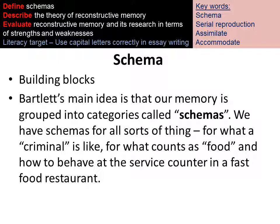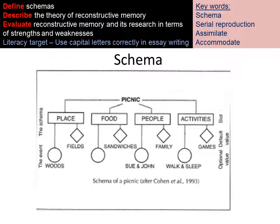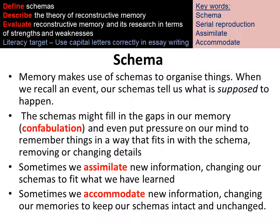Bartlett suggests that we have a schema for all sorts of different things in life, so we will have a schema for what a criminal should look like, or a schema for what counts as food. This might change as you encounter a new type of food or learn that you can eat a type of plant, and that goes into your pre-existing schema. Looking at the picture on the screen, if we consider the schema for a picnic, you would have an expectation that it might be in a field, you might have eaten sandwiches, or gone with your family. A schema will intervene when you expect something to have happened, or your schema tells you what is supposed to have happened in a certain situation.